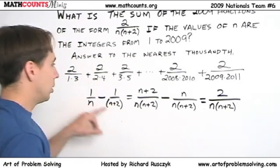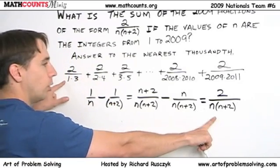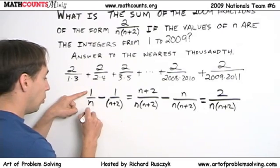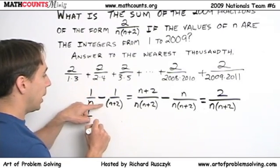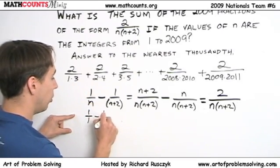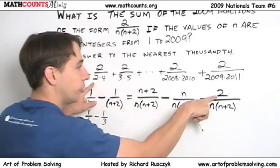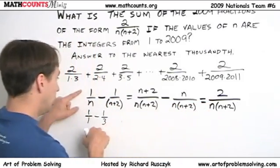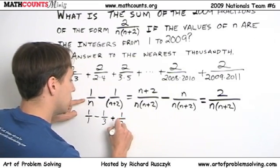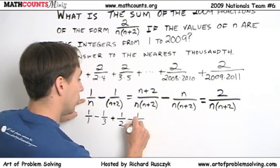Let's take a look. So, for our first term, which is 2 over 1 times 3, we can write it as 1 over 1 minus 1 over 3. Alright? Do the same thing for the next term. 2 over 2 times 4. We can write that as 1 over 2 minus 1 over 4.